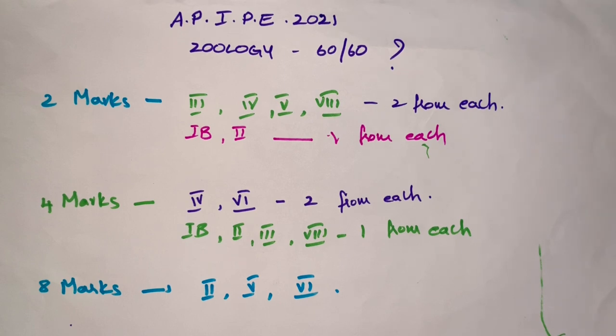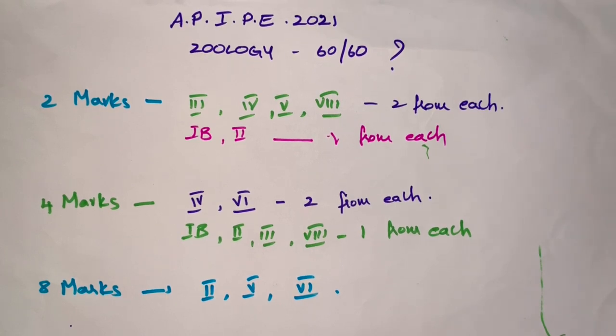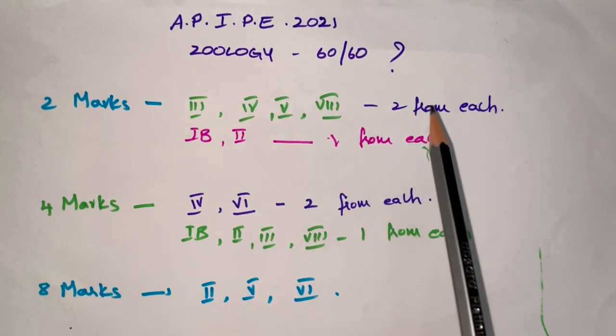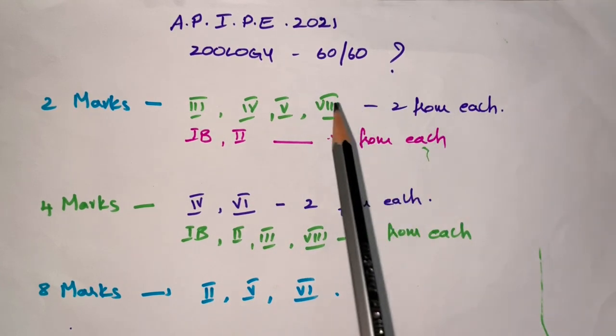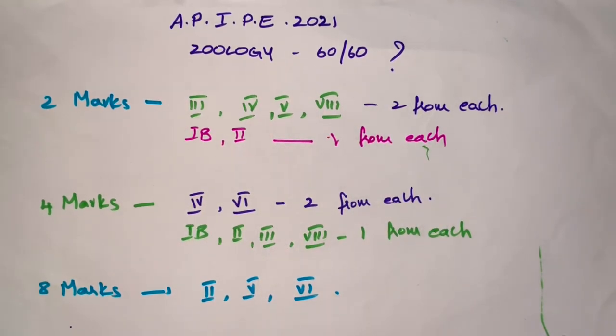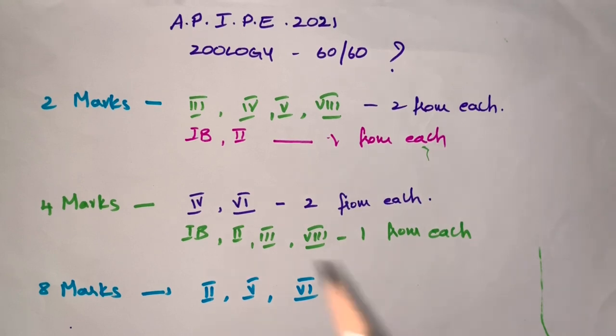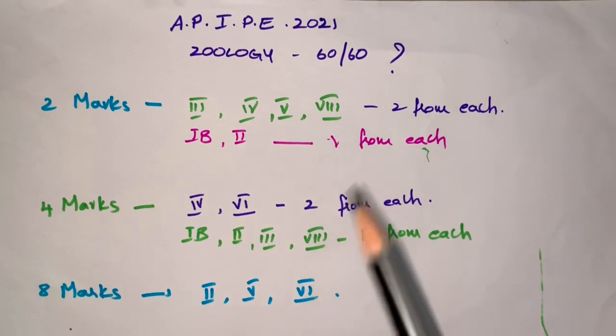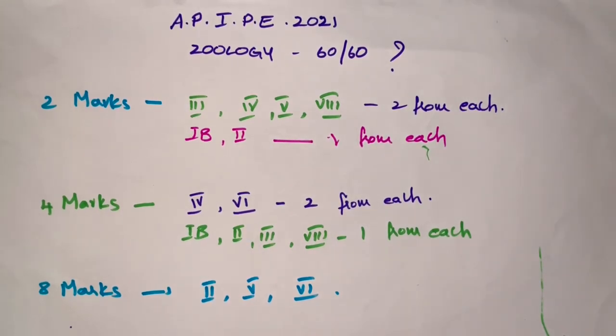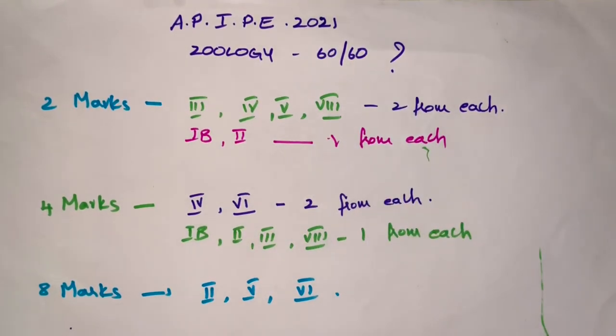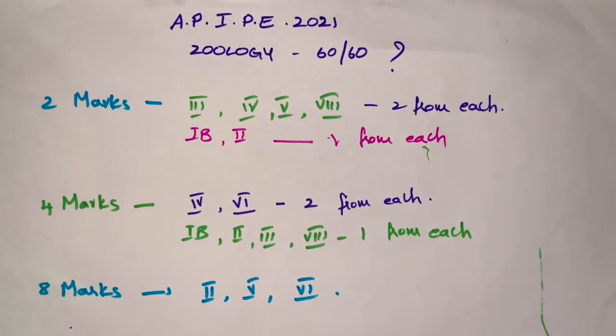Two marks questions come from chapters 3, 4, 5, and 8. From these four chapters, two questions will come from each chapter, so eight two-mark questions are from only these four chapters—that's 16 marks you will score. From chapter 1B and 2, one question comes from each chapter. You have to read all the two marks questions which are given in the textbook. The two marks questions will come from the textbook only, no other source.